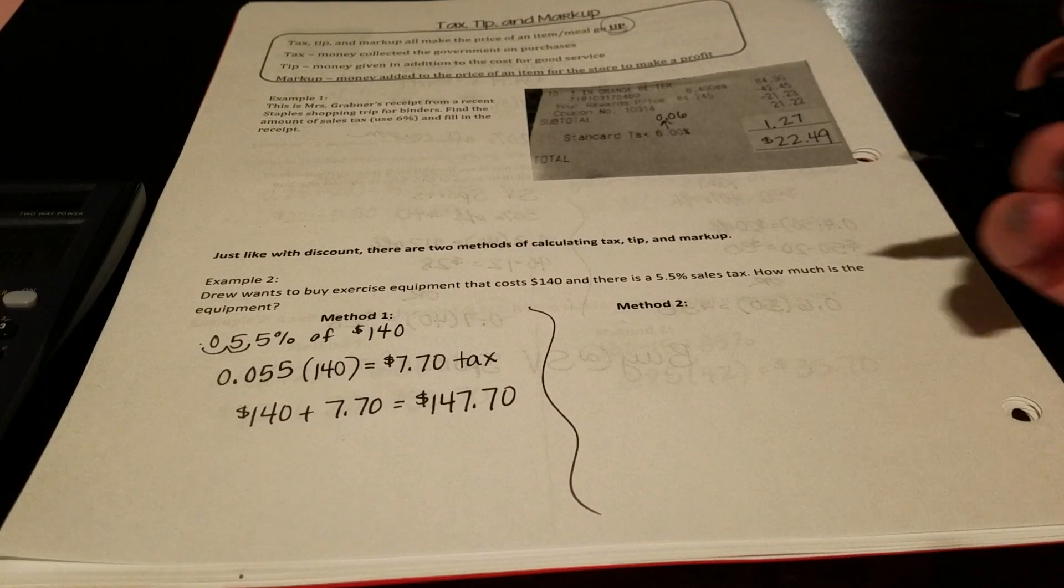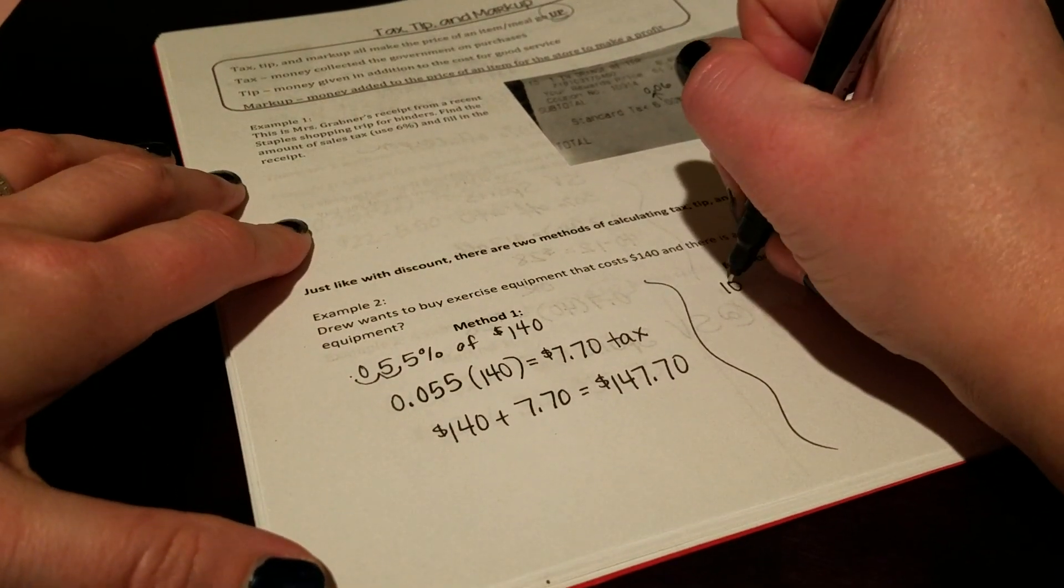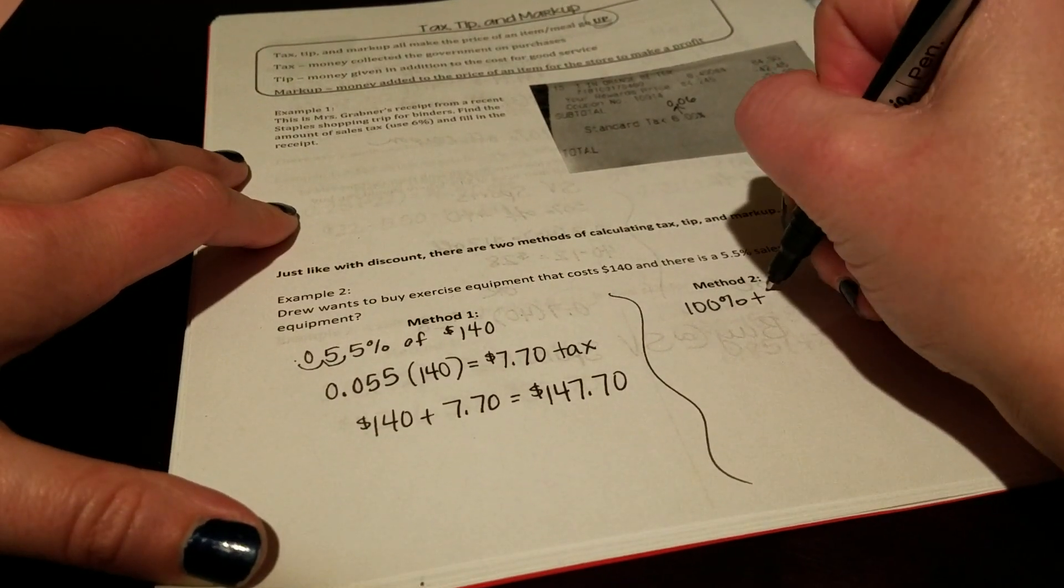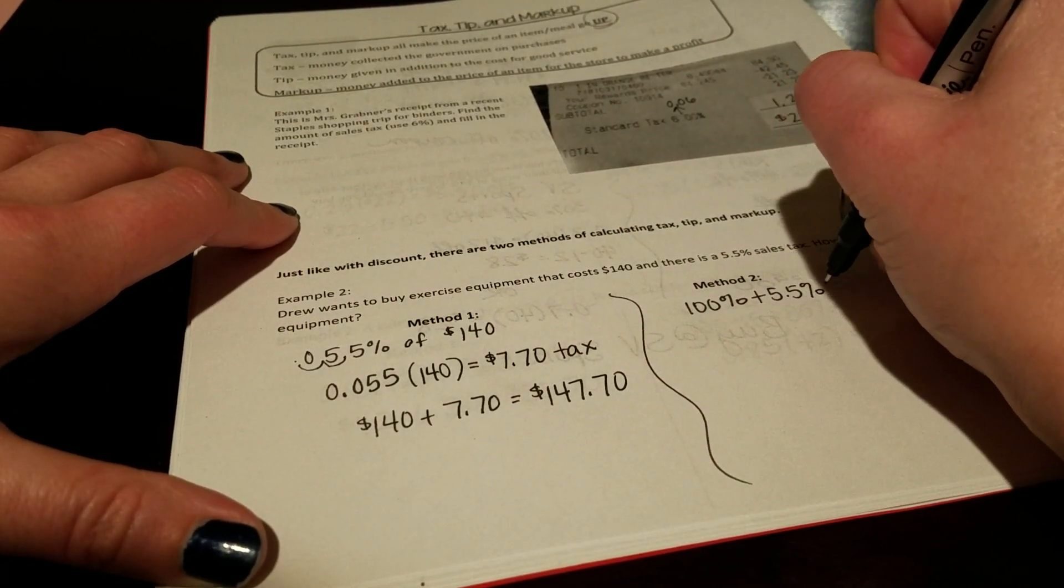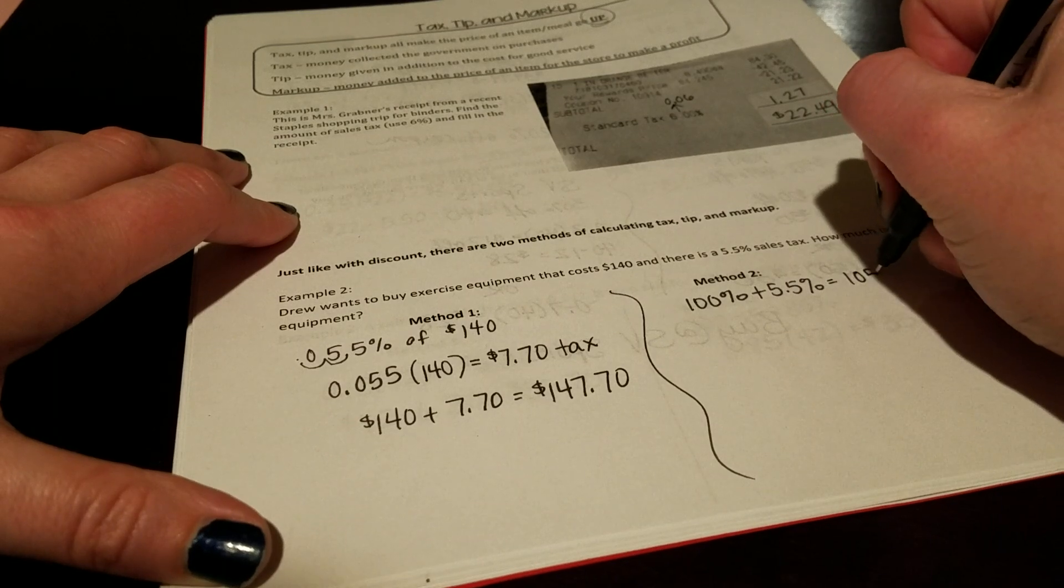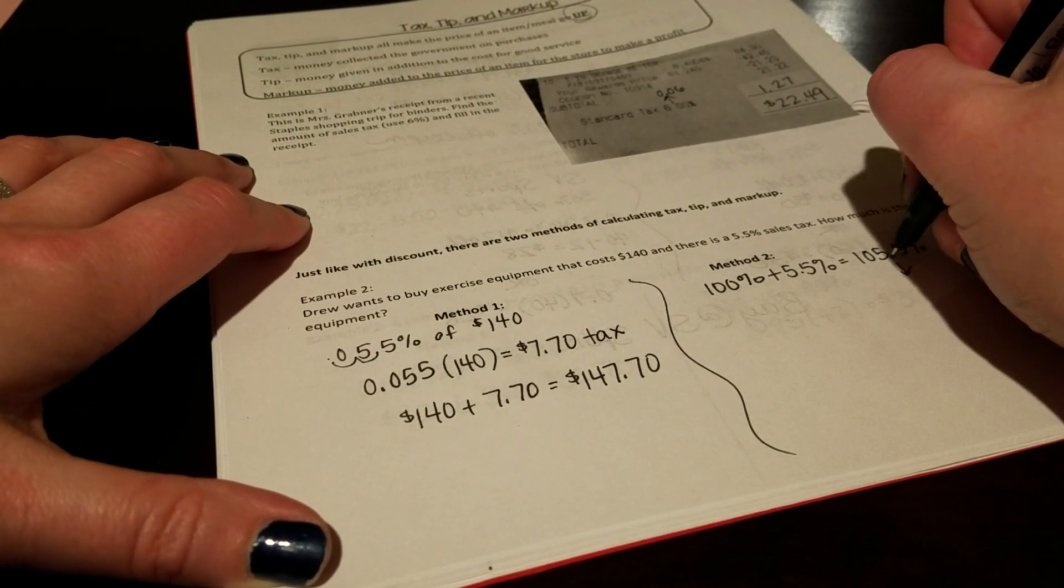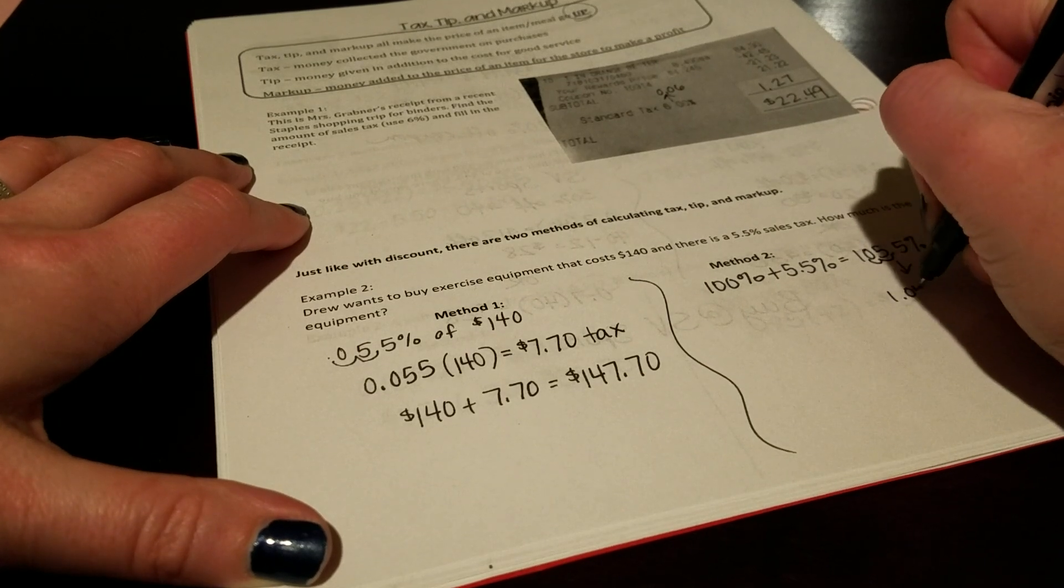Now, just like discount, you could also take that 100%, which is the cost of the item. And instead of subtracting it, the sales tax gets added on. So we can add the 5.5%, which gives us a total of 105.5%. As a decimal, 1.055.